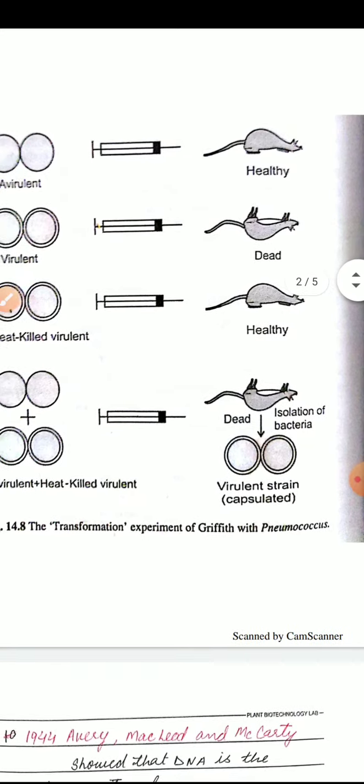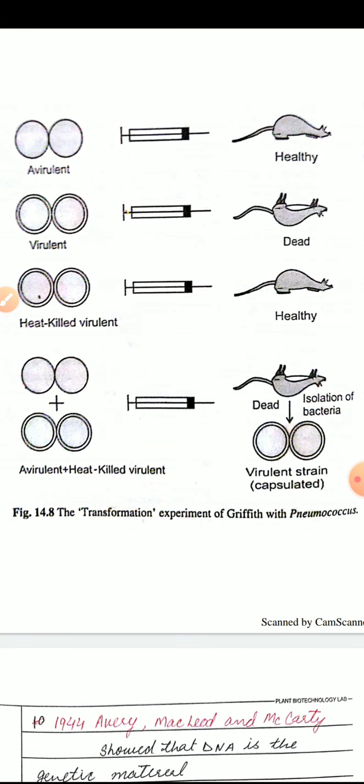आगे हम देखते हैं कि Griffith ने क्या किया। Avirulent strain को जब mouse में inject किया, तो mouse healthy रहता है। Virulent strain जो capsulated है, उसको mouse में inject करने पर mouse की death हो जाती है। फिर heat-killed virulent strain को mouse में inject किया, तो mouse फिर से healthy रहता है।